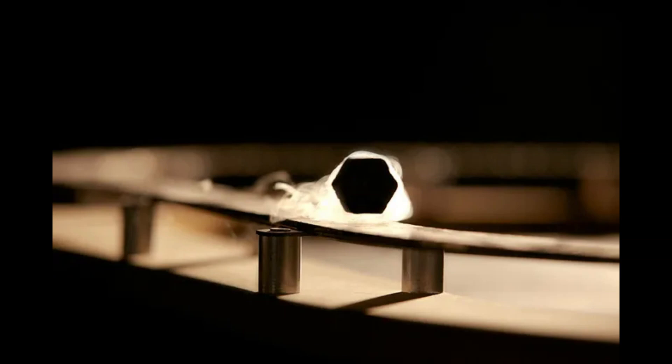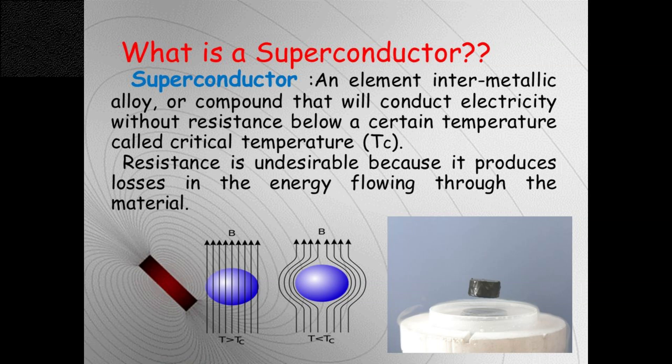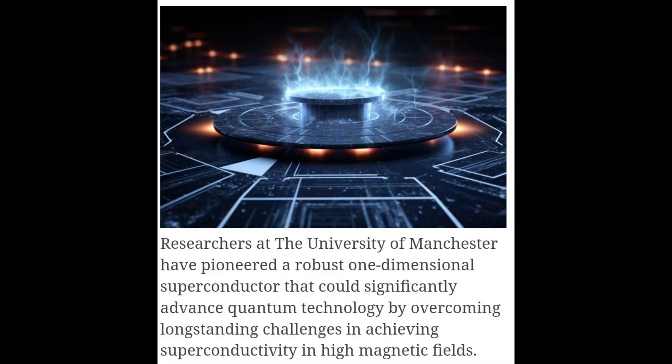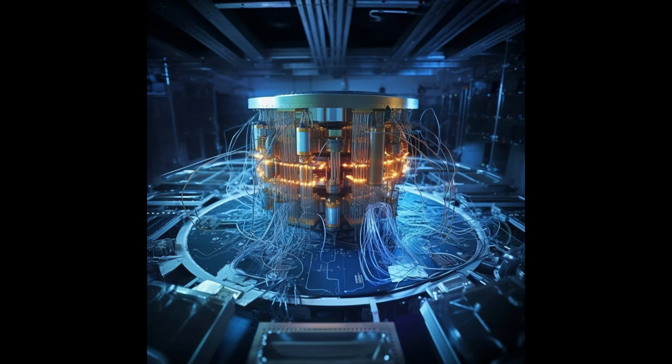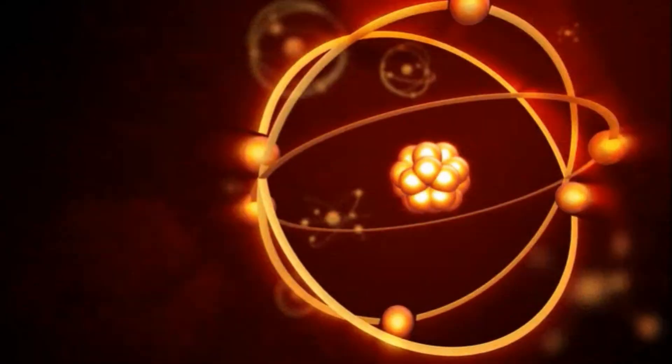Building upon their previous research, the team embarked on an innovative approach, drawing inspiration from their earlier findings that revealed the exceptional conductivity of boundaries between domains in graphene. They devised a strategy where these domain walls were strategically positioned between two superconductors, resulting in the optimal proximity of counter-propagating edge states, while simultaneously mitigating the disruptive impact of disorder.